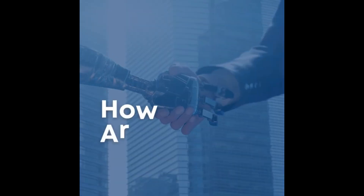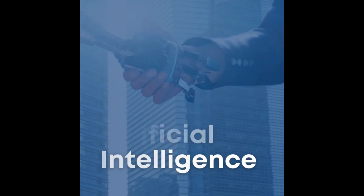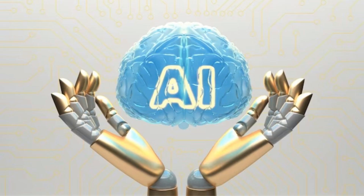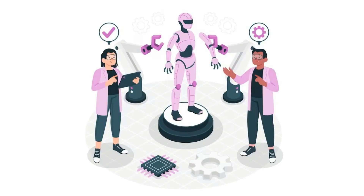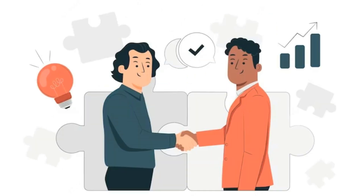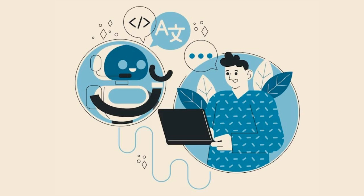For example, AI can augment human intelligence, increase productivity, and address climate change. AI also poses significant risks and challenges, such as ethical dilemmas, social impacts, and security threats. For example, AI can raise questions about fairness, accountability, and transparency, affecting human relationships and jobs, and enabling malicious attacks and cyber warfare.